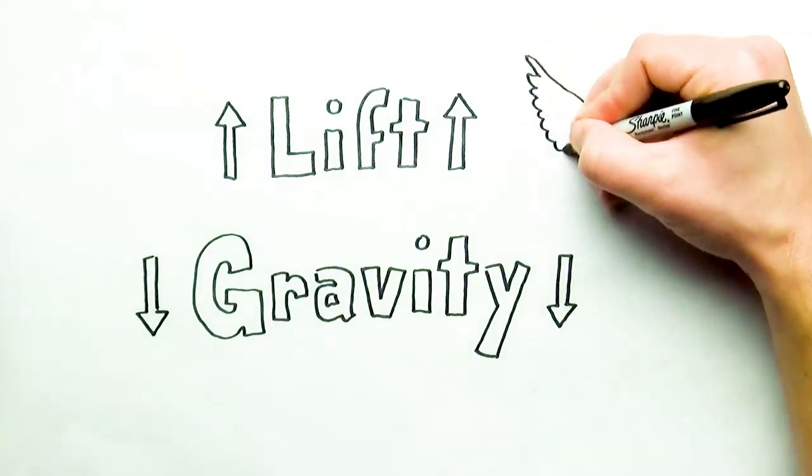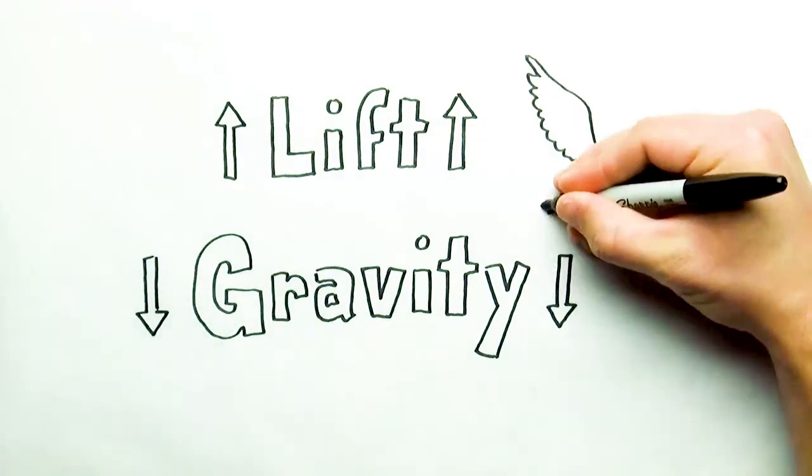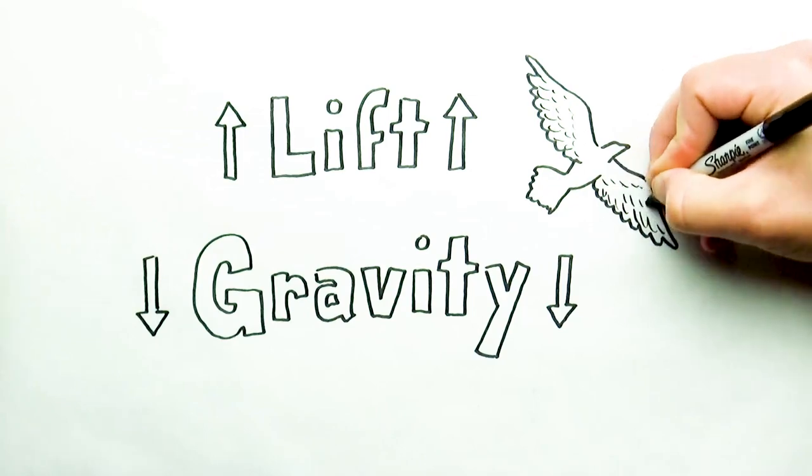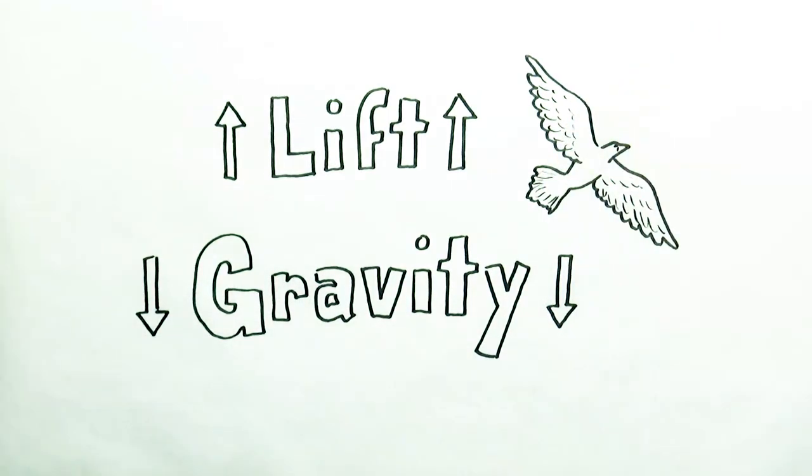When a bird spreads its wings and soars through the air, gravity is still in effect, but it doesn't stop the bird from flying because the winged creature has engaged in a law that transcends the law of gravity.